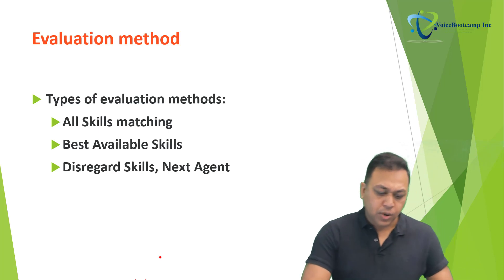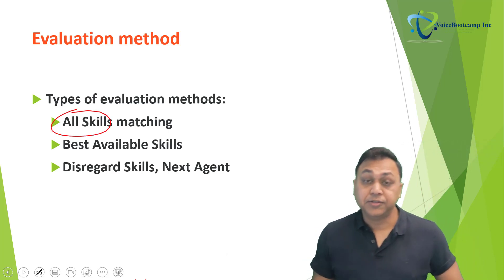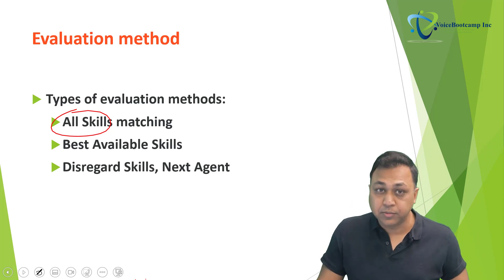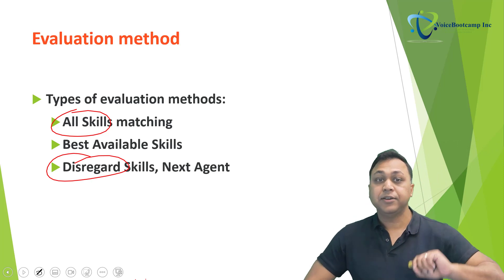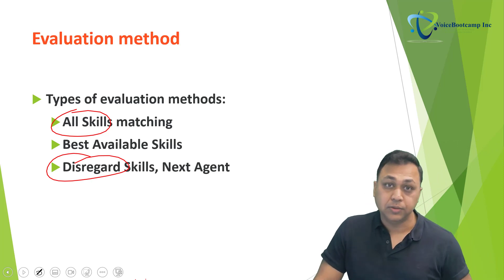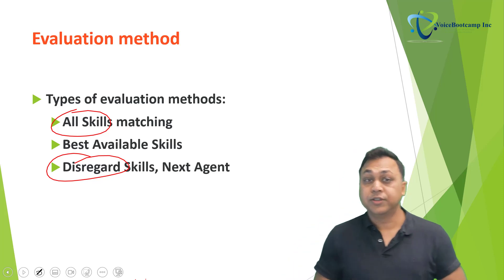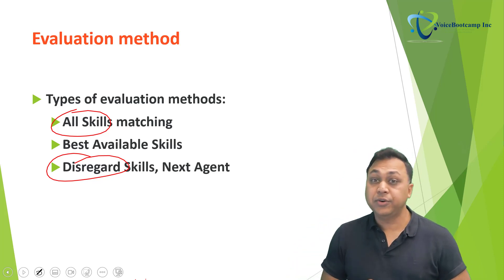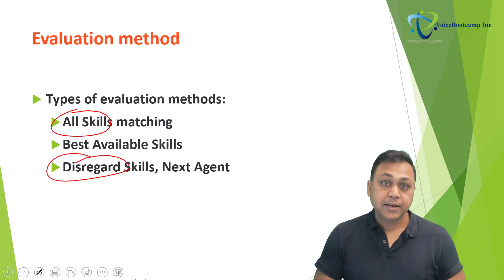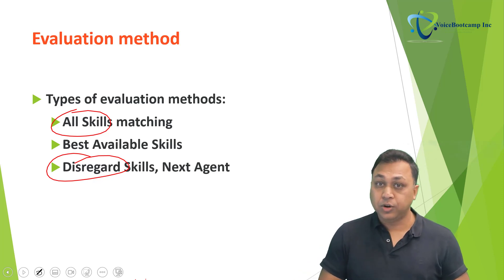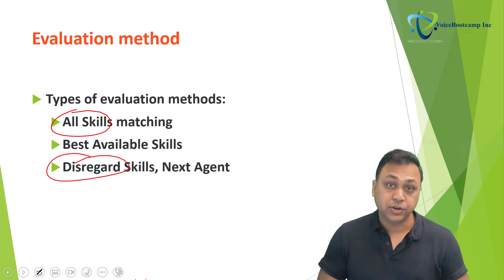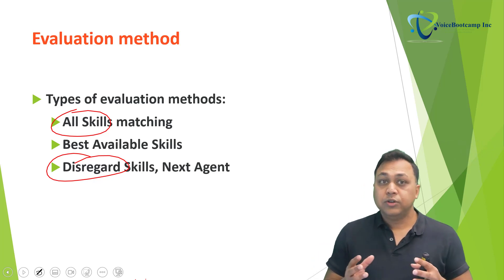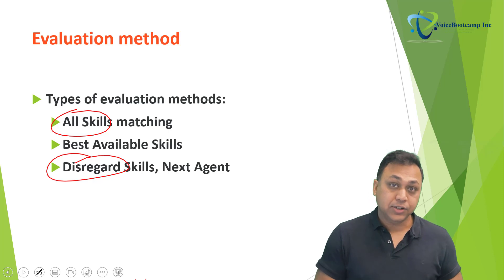There are three different ways of evaluating an agent. The options are: all skills matching, best available skills, or disregard skills. These are the three standard evaluation methods available to you. When you select all skills matching, Genesys Cloud only considers agents who have all the required skills. The agent who has been waiting the longest time since the last ACD interaction will be routed for the interaction, so every agent must have skills that match.